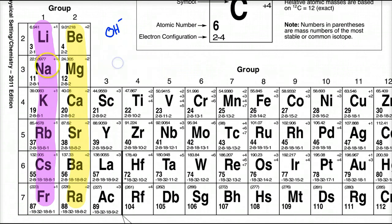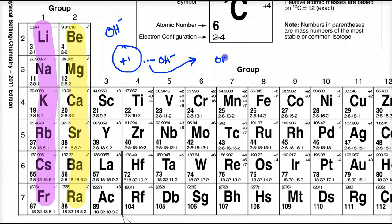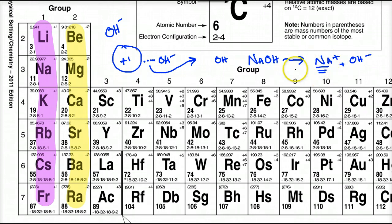Group one ions are soluble because their charge densities are too low — they're too large for a +1 charge to strongly attract the hydroxide. They have weak coulombic attraction, so they completely dissociate into hydroxide ions. Sodium hydroxide and lithium hydroxide completely dissociate because of their solubility. If you have a 5 molar solution of NaOH, you have a 5 molar solution of hydroxide ions — a 1:1:1 ratio because of complete dissociation.